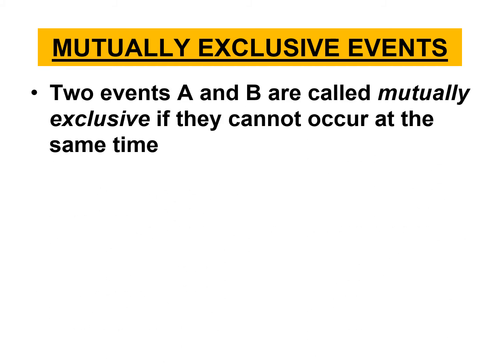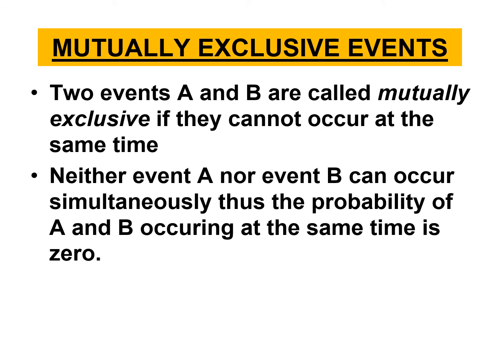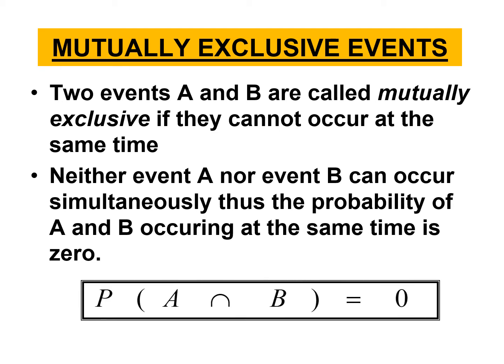Let's discuss a sub-topic: mutually exclusive events. Look at the definition. Two events A and B are called mutually exclusive if they cannot occur at the same time — neither event A nor event B can occur simultaneously. Thus, the probability of A and B occurring at the same time is 0, written as P(A ∩ B) = 0.